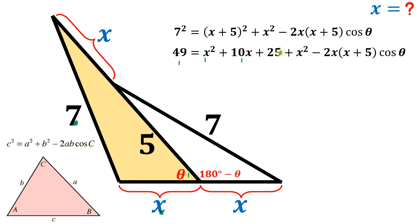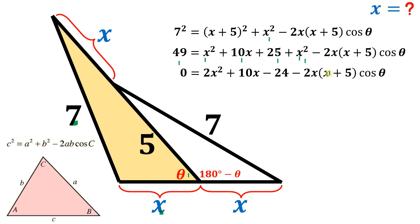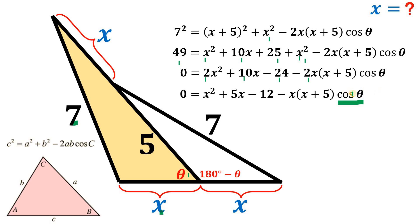Simplifying: 49 = x² + 10x + 25 + x² − 2x(x + 5)·cos(theta). Combining like terms gives 2x² + 10x − 24 − 2x(x + 5)·cos(theta). Dividing all terms by 2 and rearranging, we get cos(theta) = (x² + 5x − 12) / [x(x + 5)].